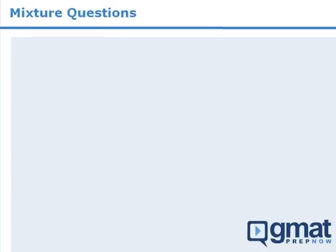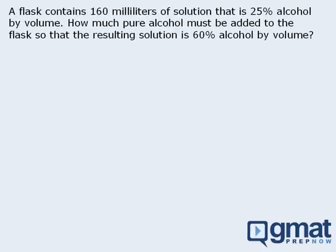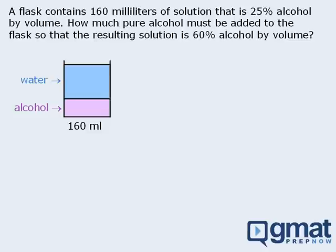Let's try another question. Here we have a 25% alcohol solution, and we want to determine how many mL of pure alcohol must be added to the solution so that the resulting solution is 60% alcohol by volume. Let's begin by sketching the initial solution with the water and alcohol separated. The question tells us that the initial solution is 25% alcohol by volume. So if there is 160 mL of solution, and 25% of 160 is 40, then we know that there is 40 mL of alcohol in the solution. This means the remaining 120 mL must be water.